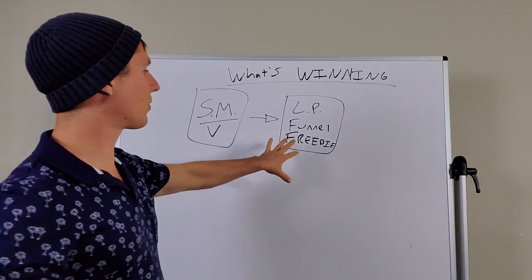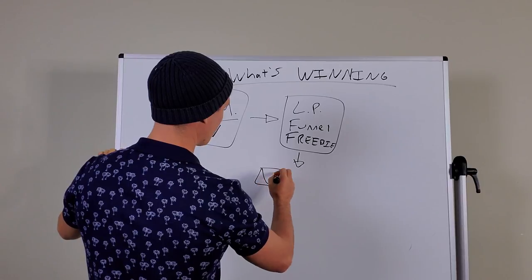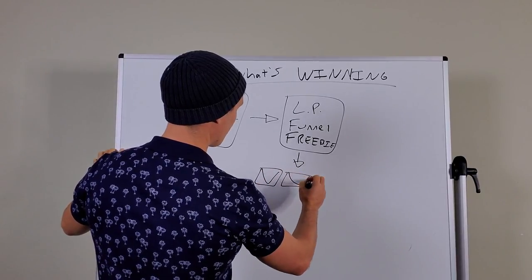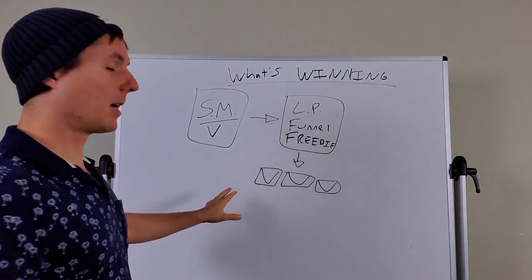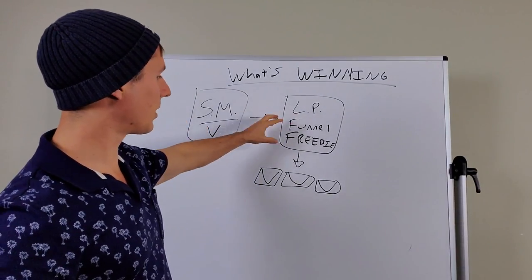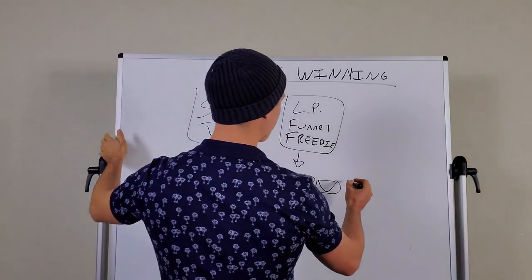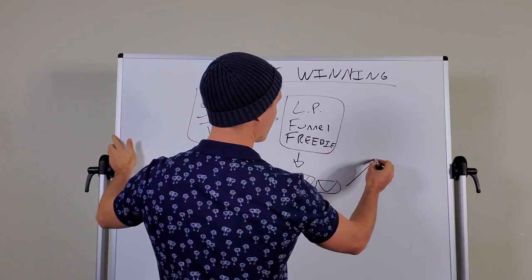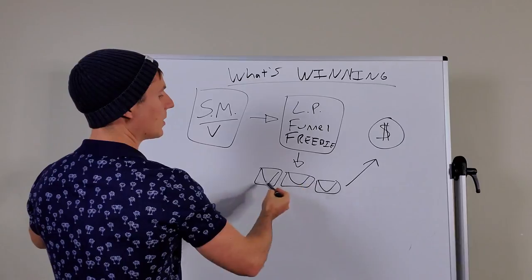Now from this freebie, people get added to an email sequence. Draw some emails here. These are letterboxes. Okay, excuse the horrendous artistry. That's the email sequence right there. So from social media you get sent to a freebie. From there you get a bunch of emails in the inbox, and then from here you get sent to an offer page where they try to make you an offer.